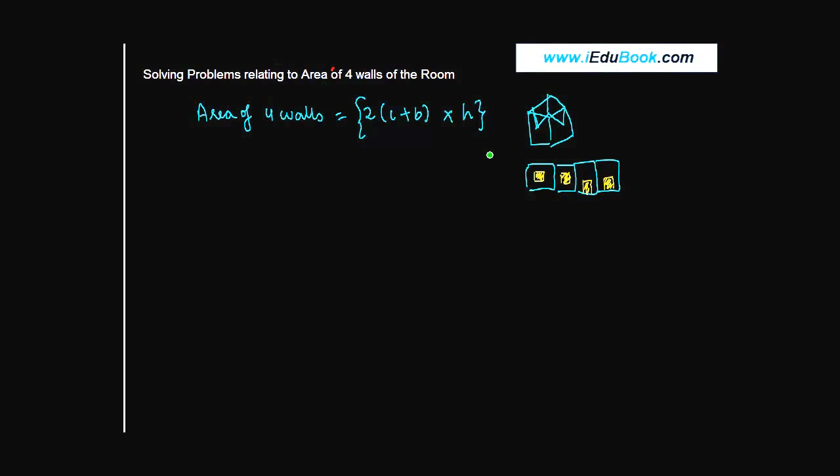It follows from logical conclusion that whenever the walls will be painted, we are going to paint the area other than the area occupied by these windows or doors. We will not be painting them with the same color as the rest of the walls.